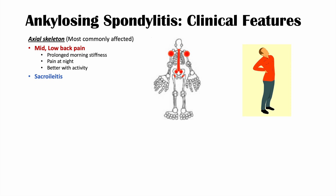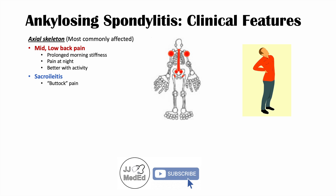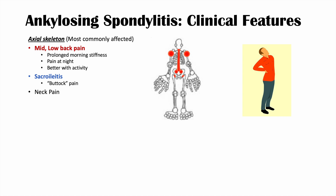We may also see sacroiliitis — inflammation of the sacroiliac joint — presenting as buttock pain that can alternate between sides or be bilateral. Neck pain can also occur, as this condition affects the entire spine, and neck pain can actually be one of the first presenting features of ankylosing spondylitis.